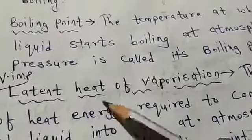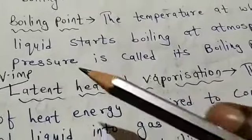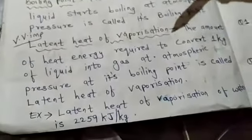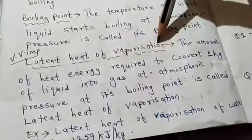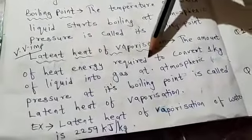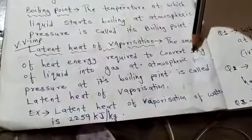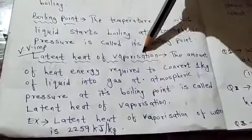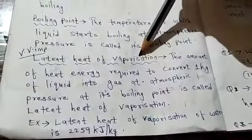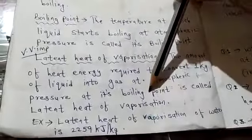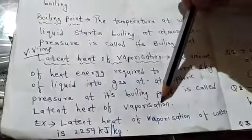Latent heat of vaporization — this is very important. Latent heat means hidden heat, and vaporization means liquid changing to gas. So latent heat of vaporization is the amount of heat energy required to convert 1 kg of liquid into gas at atmospheric pressure at its boiling point. Here boiling point, because it is latent heat of vaporization — vaporization means liquid to gas.